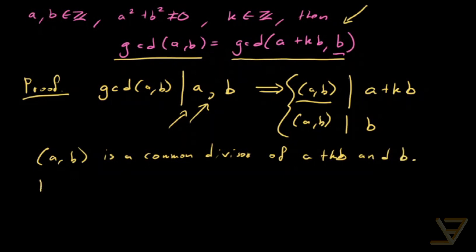Now what Bezout's lemma then tells us is that the gcd of a and b divides the gcd of a plus kb and b, because any common divisor of two numbers divides their greatest common divisor.